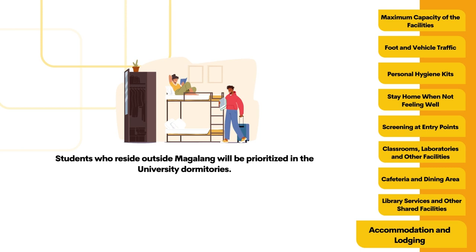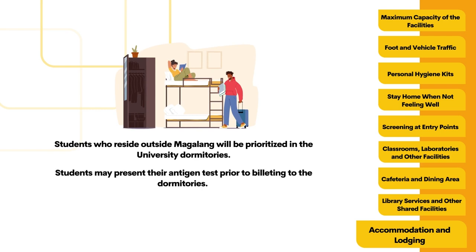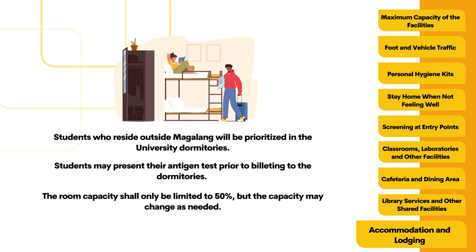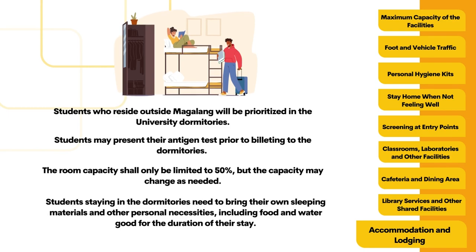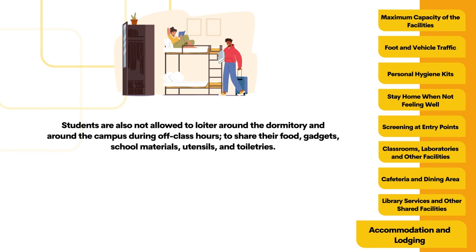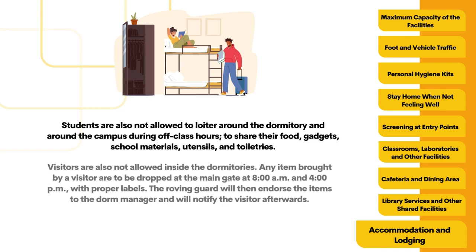Students who reside outside Magalang will be prioritized in the dormitories. Students may present their antigen test prior to billeting. The room capacity shall only be limited to 50%, but the capacity may change as needed. Students staying in the dormitories need to bring their own sleeping materials and other personal necessities, including food and water good for the duration of their stay. Students are also not allowed to loiter around the dormitory and campus during off-class hours, nor share food, gadgets, school materials, utensils, and toiletries.